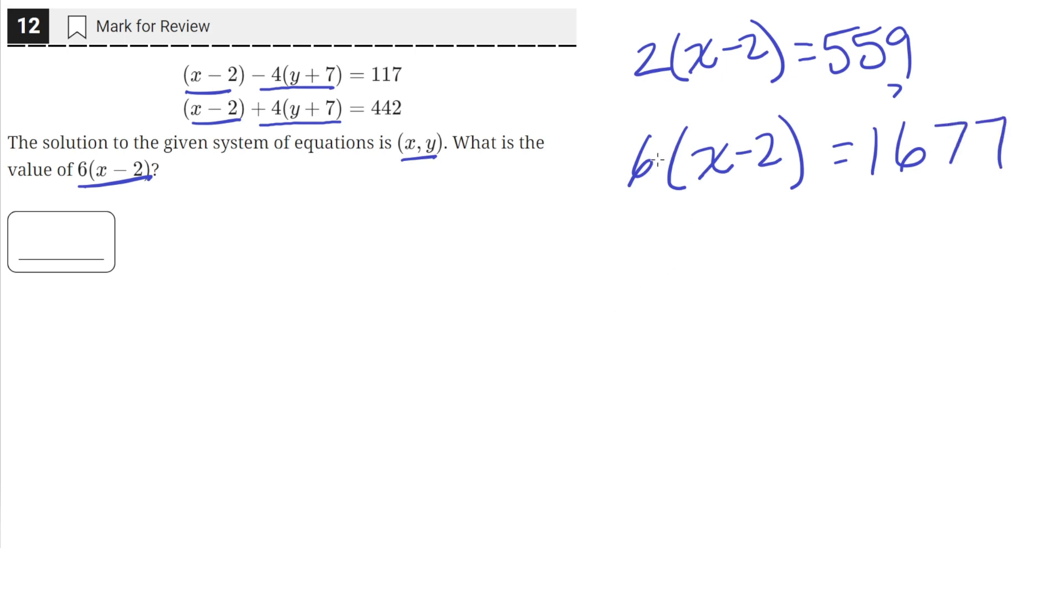So the value of 6 times x minus 2 is equal to 1677.